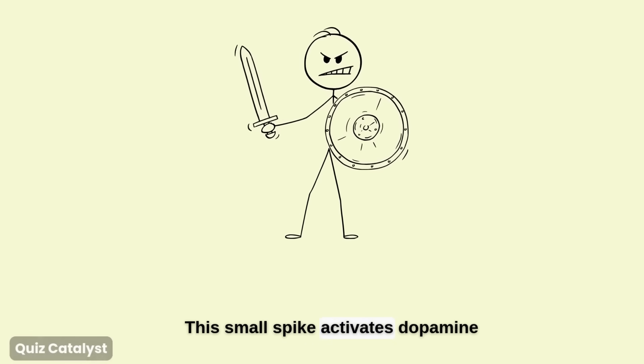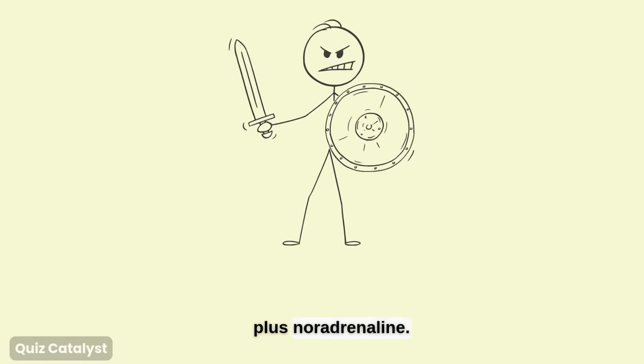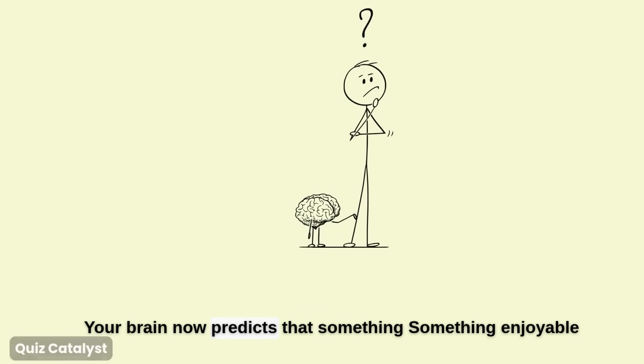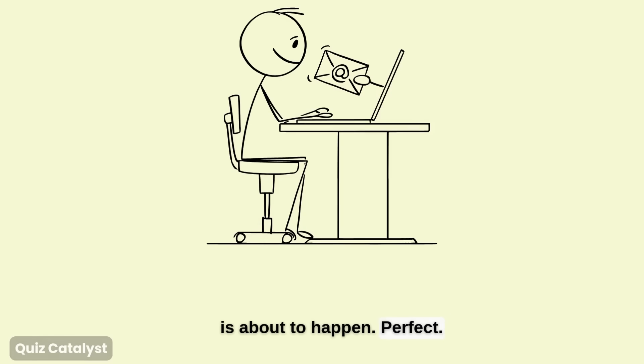This small spike activates dopamine plus noradrenaline. Your brain now predicts that something enjoyable is about to happen. Perfect.